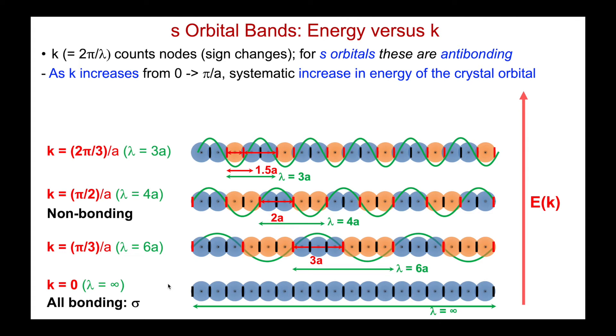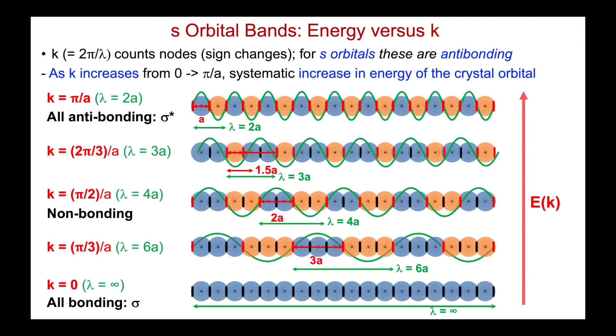Let's put in more nodes. So we're increasing the k value now to two-thirds π over a. Here's the arrangement of atomic orbitals that would correspond to that. And then finally, the highest energy at π over a, everything is anti-bonding. And so we can truly give it a σ* designation because it's completely anti-bonding. And this is the highest energy.